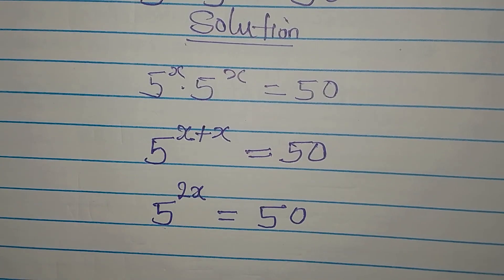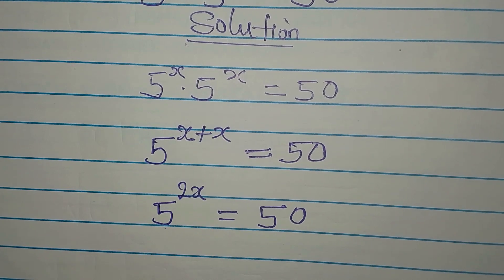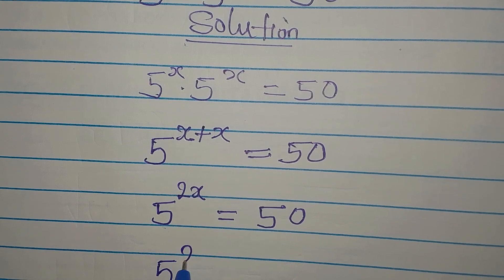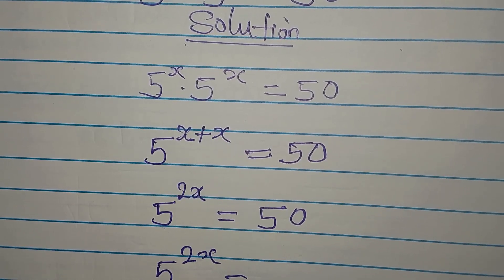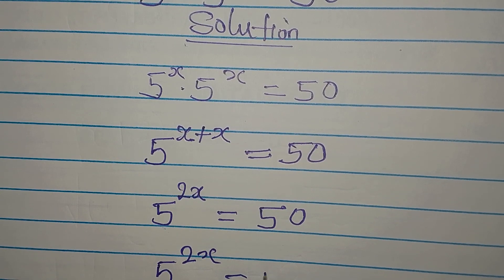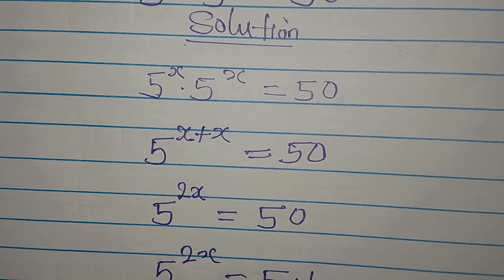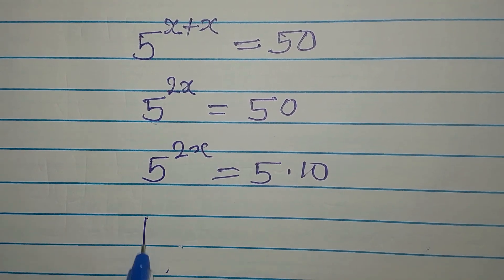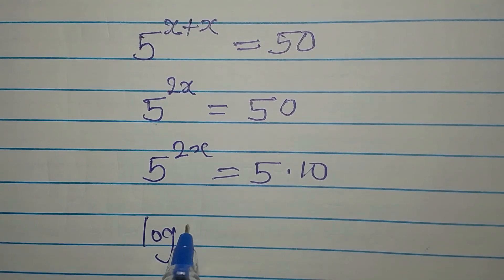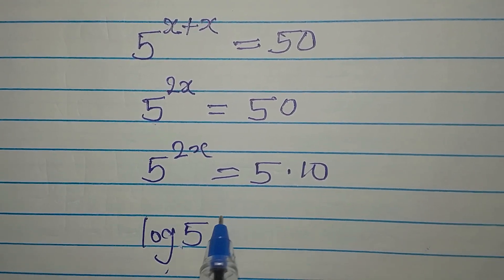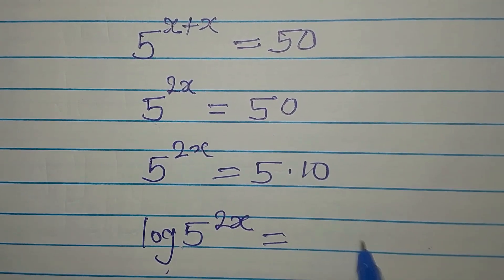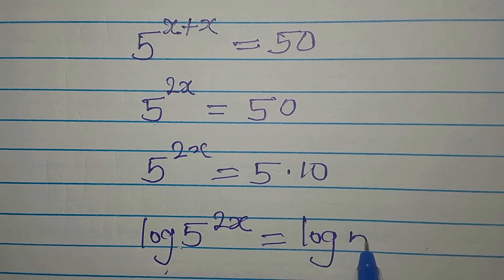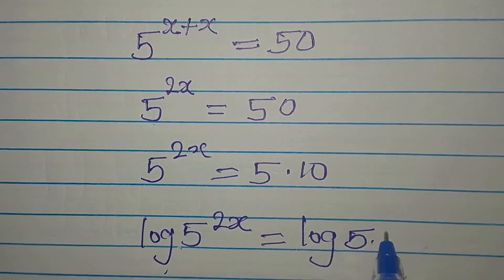Now what we want to do is take the log of both sides. But before the logs, note that 5 to the power of 2x equals 50, and 50 is 5 multiplied by 10. So now we can take the log, giving us log of 5 to the power of 2x equals log of 50, which is 5 multiplied by 10.